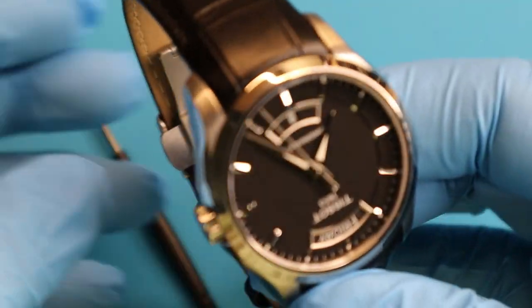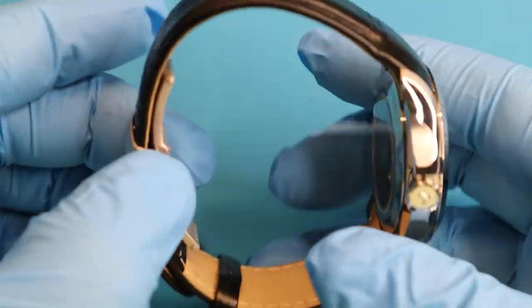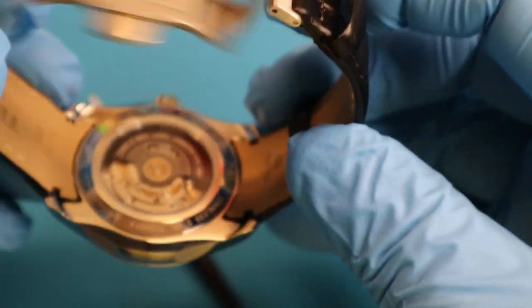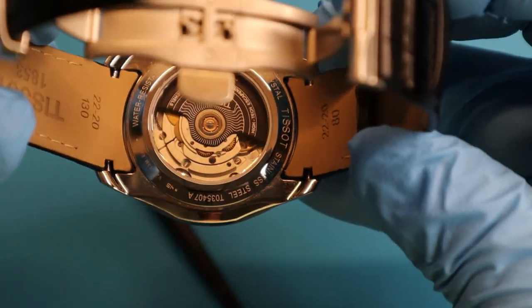We'll start with the Tissot. I recommend opening up your bracelet just to give yourself the most room to work because we're going to be working inside here down in the pocket of the watch.